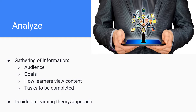A is for analyze. During the analysis phase, we're gathering information and critiquing and analyzing this information. We begin with our audience and think about our learners — what types of learners are coming into our learning experience, what attitudes are they bringing, what goals do we have for the training, and what tasks are to be completed. Based on this information, we can decide on a learning theory or approach to take with the remaining steps.